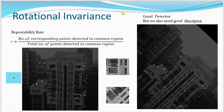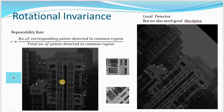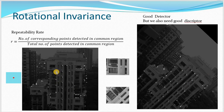Let us first talk about rotational invariance. I have two images — basically two scenes of the same image. You can see that one image is rotated by a particular angle. I have applied the Harris detector on this image and plotted the points on it, and correspondingly I have plotted the points in the rotated image also. You can see that more or less the points are on the same locations — if you consider this point over here, there is a corresponding point in the rotated image.